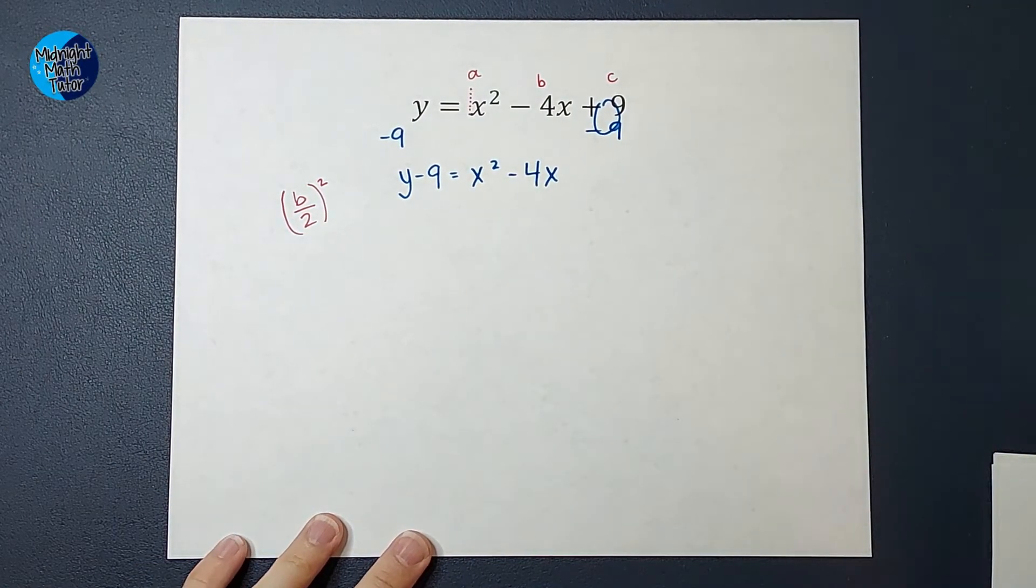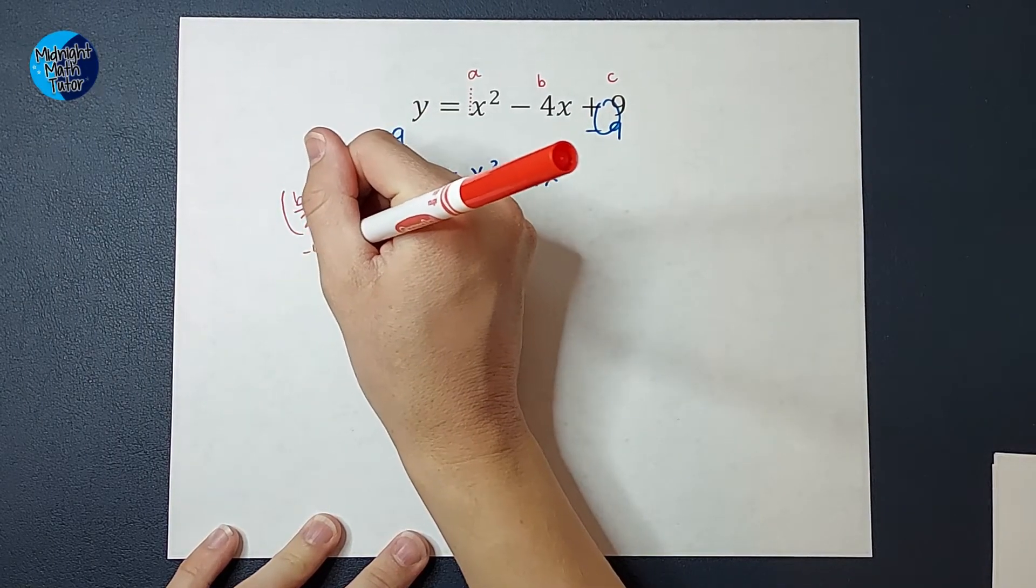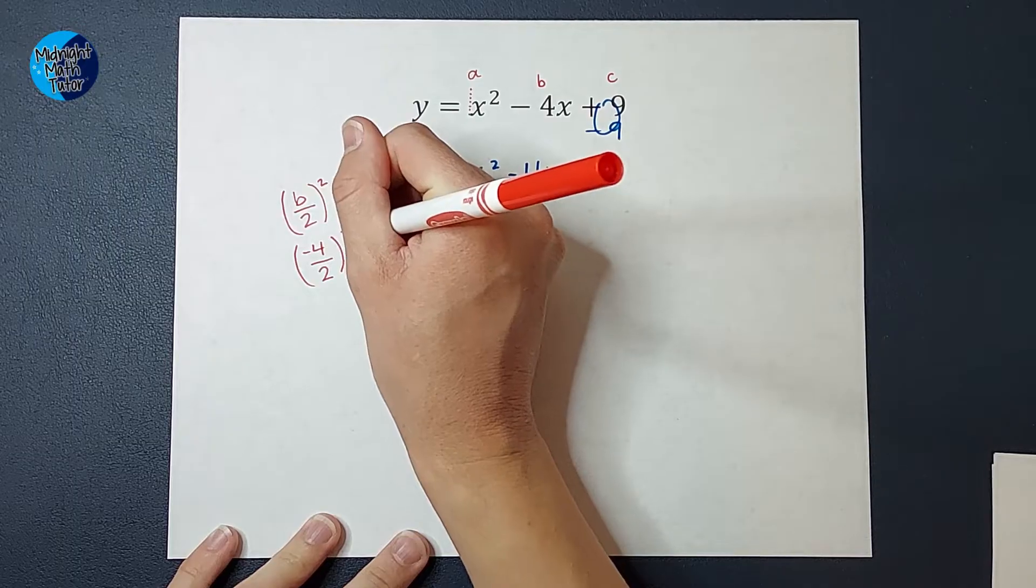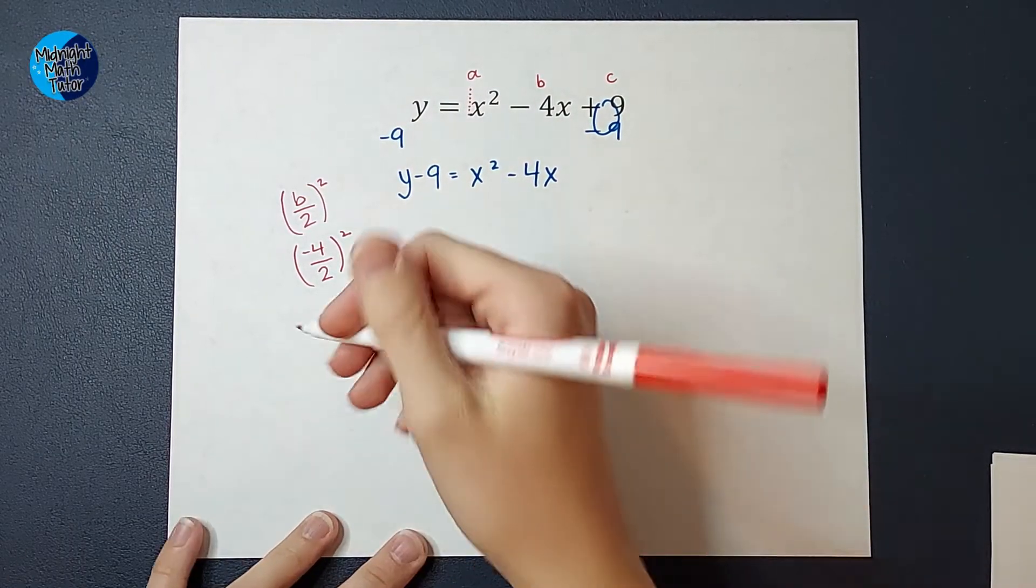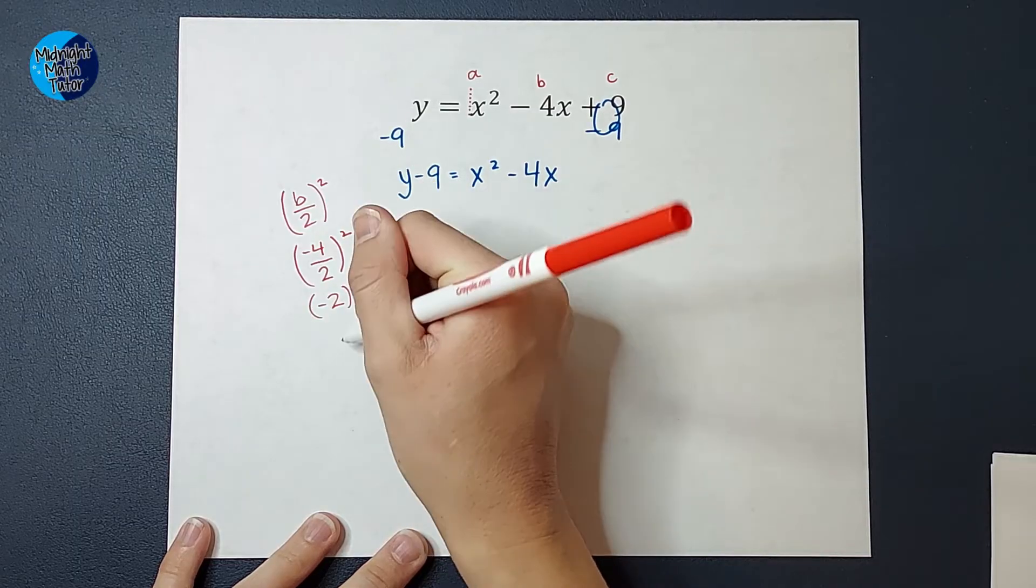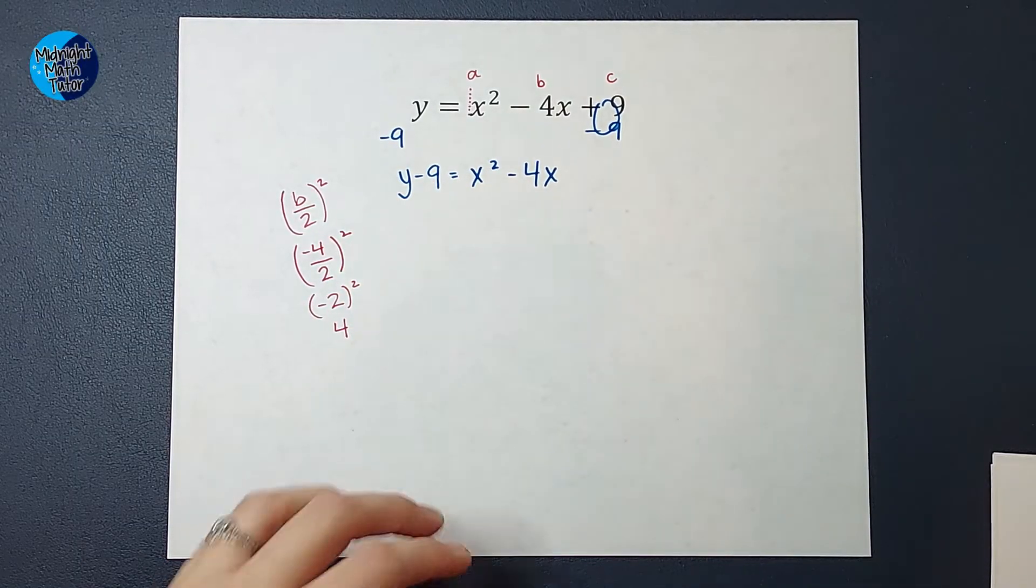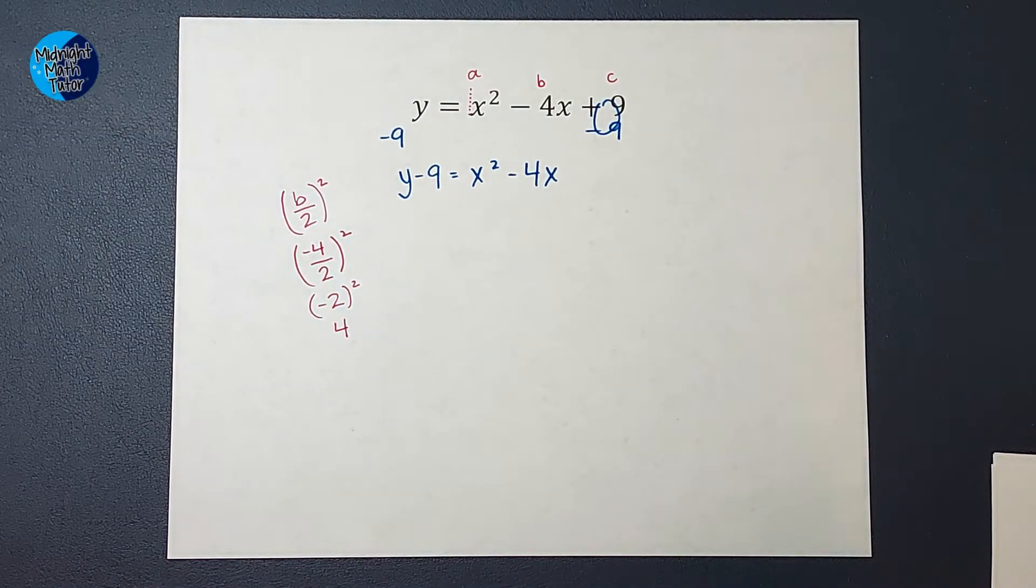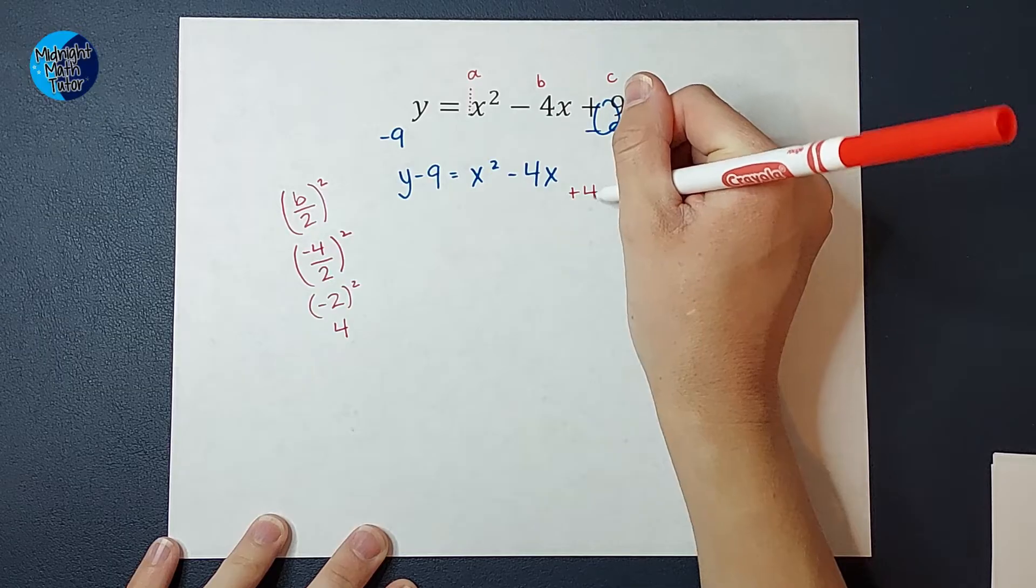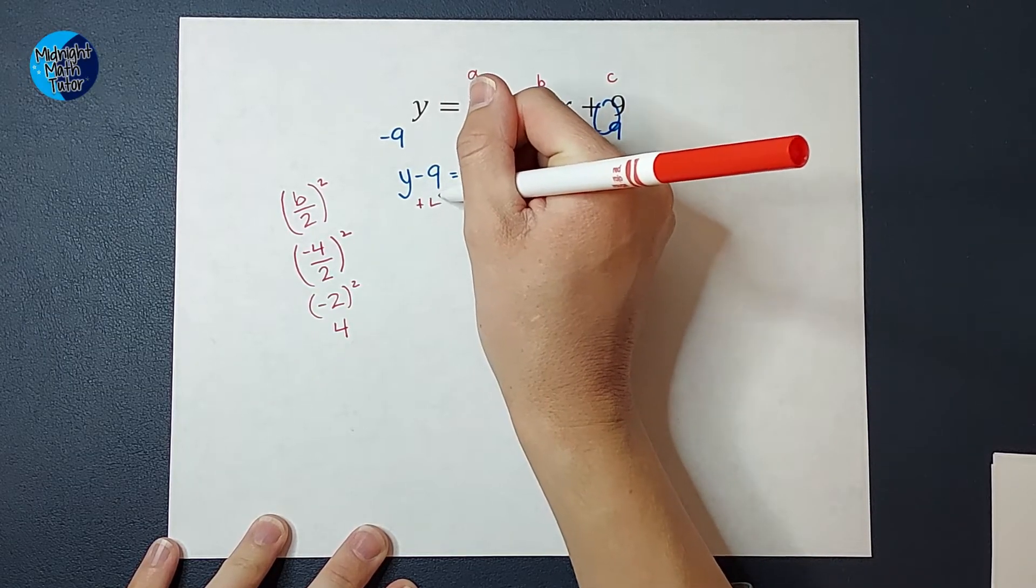So in this case, b is negative 4. So I'm going to take negative 4, divide it by 2, and square it. Negative 4 divided by 2 gives me negative 2. When I square that, I get a positive 4. So I believe this, I don't want to call it a magic number, but it kind of is. I'm going to add 4 to both sides.